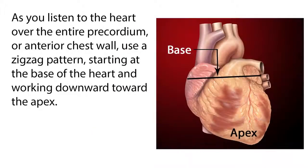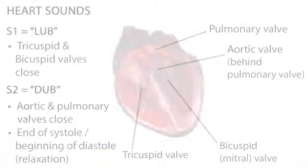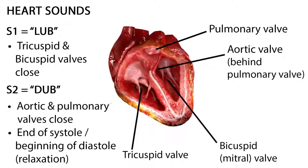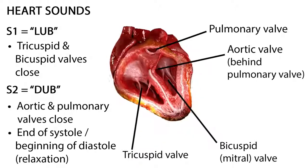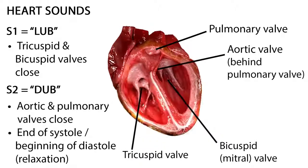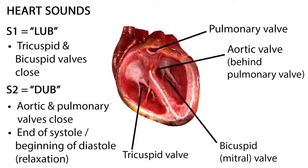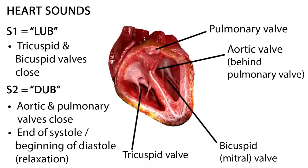Hair on the chest can also cause friction under the stethoscope, which can be minimized by lightly wetting the hair before auscultation. As you listen to the heart over the entire precordium, or anterior chest wall, use a zigzag pattern, starting at the base of the heart and working downward toward the apex. Normal heart sounds, S1 and S2, are caused by events in the cardiac cycle. As blood flows from the atria to the ventricles, it goes through the tricuspid and bicuspid valves. These valves then snap shut, making the first heart sound, S1 — the 'lub' in 'lub dub.'